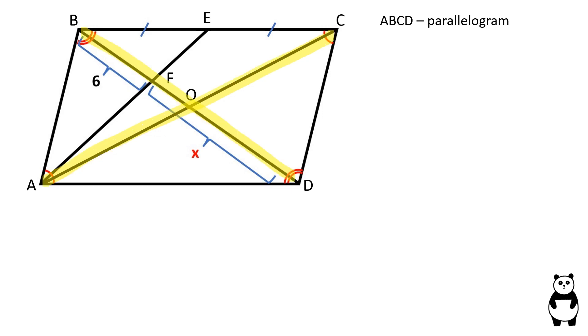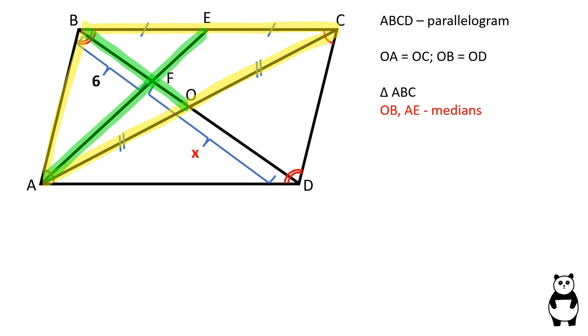Since the diagonals of a parallelogram always intersect each other at their midpoints, OA is equal to OC and OB is equal to OD. In the triangle ABC, OB and AE are medians which intersect at point F.